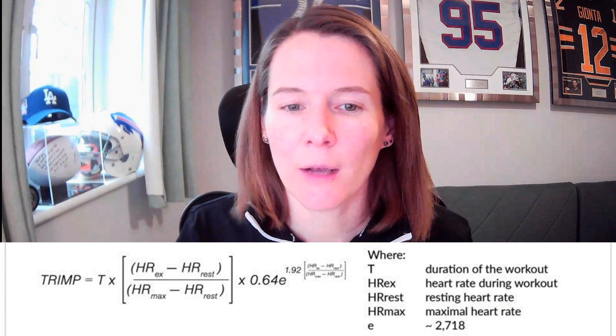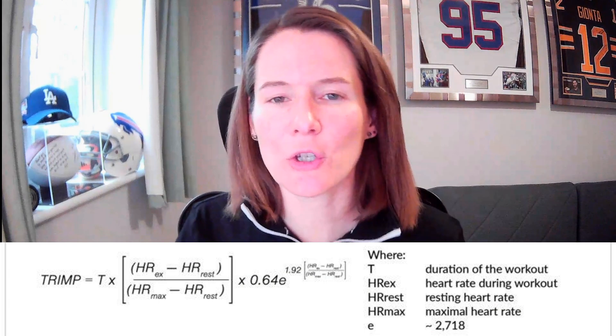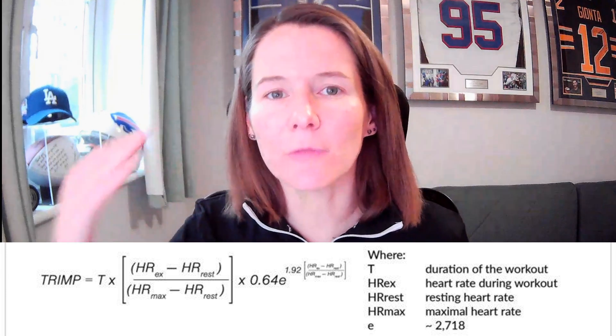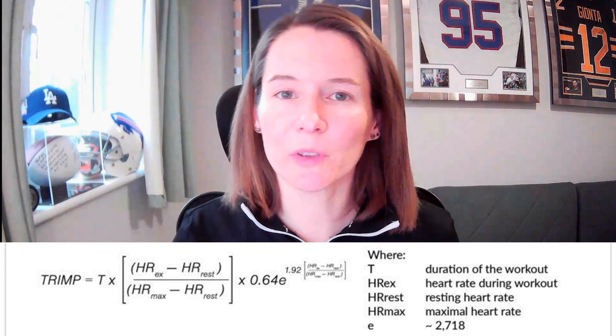First Beat Sports have modified that into their current version of TRIMP, in which instead of using the mean heart rate across the whole workout — as Bannister initially proposed — First Beat uses beat-to-beat heart rate data in order to give a more updated TRIMP score that better captures the variation within a session. This is really important in the more intermittent-based team sports. You can see the formula First Beat Sports currently use to calculate their TRIMP accumulation — there is an exponential relationship with exercise intensity, so you get a higher relative weighting for a higher heart rate, and that is summated to give the TRIMP score for a session.